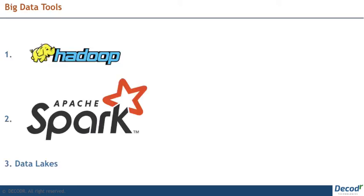Moving on to Big Data Tools. We keep hearing the term Big Data everywhere and there are lots of definitions attached to it. But the most useful one is that Big Data is data which is too big to process or store on a single computer. To work on that, you need to put it on multiple computers that behave like they are just one. To enable this kind of distributed computation, we have Hadoop, Spark, and Data Lakes that work on clustered storage.